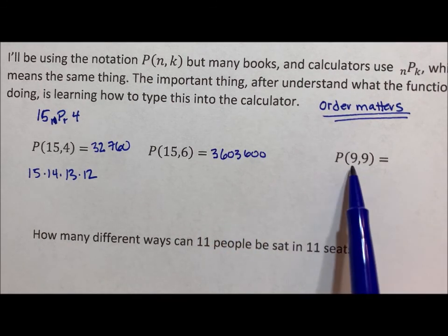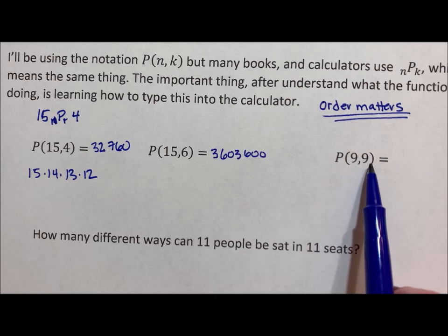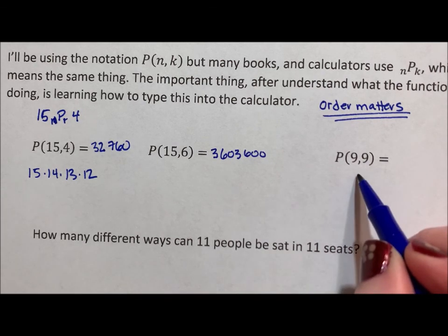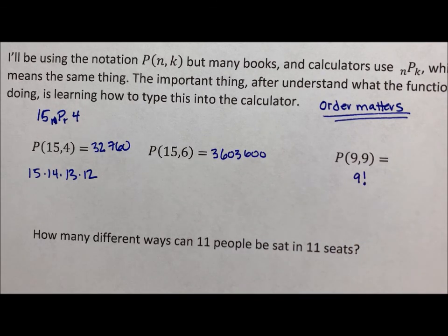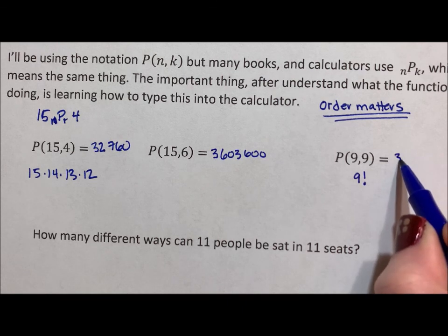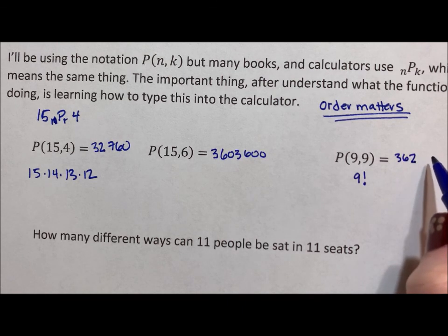And this P(9,9), that's the permutation of nine taken nine at a time. So that's all nine of them. This is exactly the same as nine factorial because we're saying, hey, we want all nine items of nine factorial. So the permutation of nine taken nine at a time. So this is actually going to end up being 362,880.